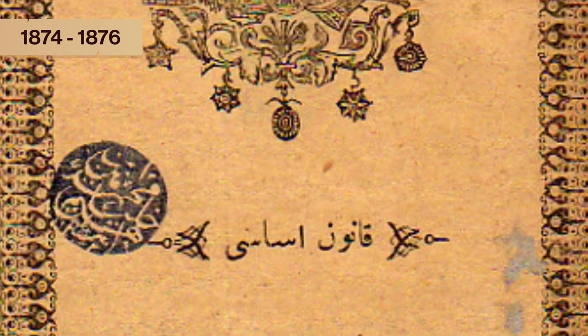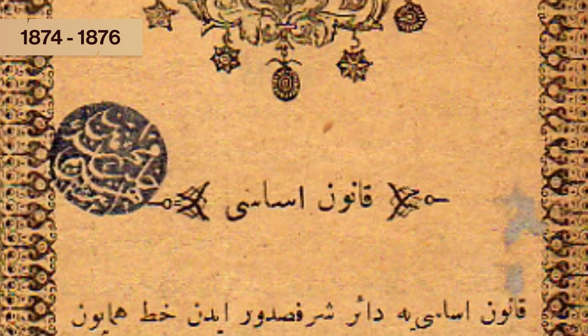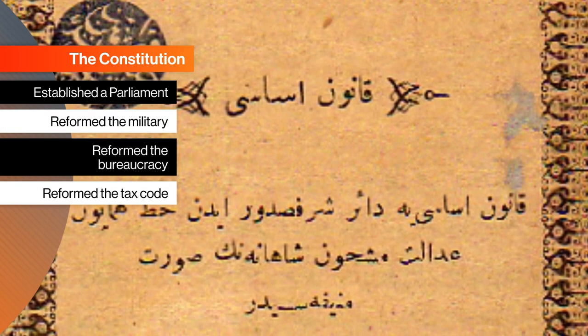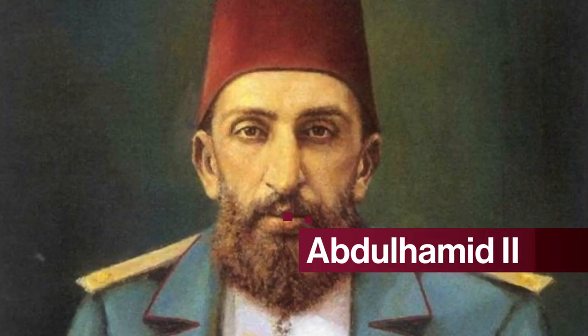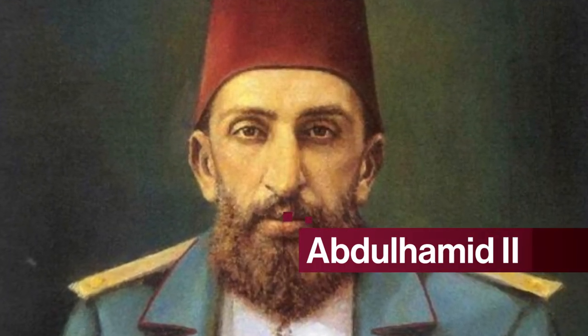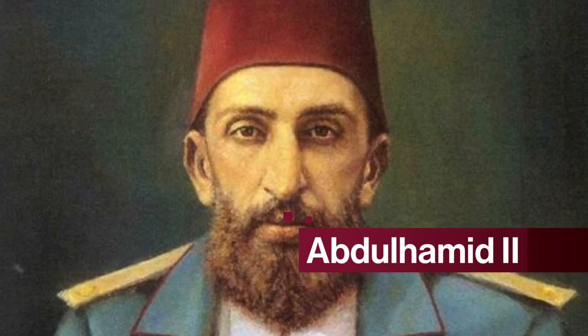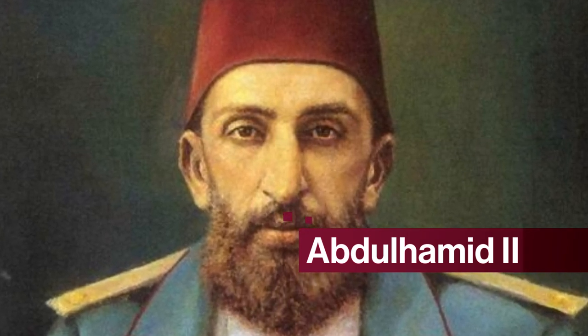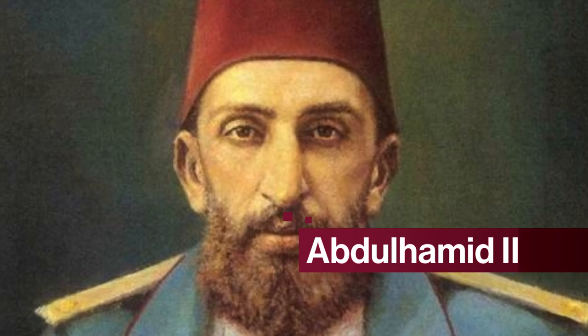And these tensions came to a head in 1908 because of two important events. First, there was a revolution. From 1874 to 1876, the Ottoman Empire worked under a constitution in the effort to modernize the empire. The constitution established a parliament, reformed the military, the bureaucracy, and the tax code, and defined people's legal rights as citizens. It was a big deal — the result of over 30 years of reforms. But then the sultan, Abdul Hamid II, suspended the constitution and began to rule without any restraints on his power — think no to parliament and human rights, and yes to secret police and censorship.